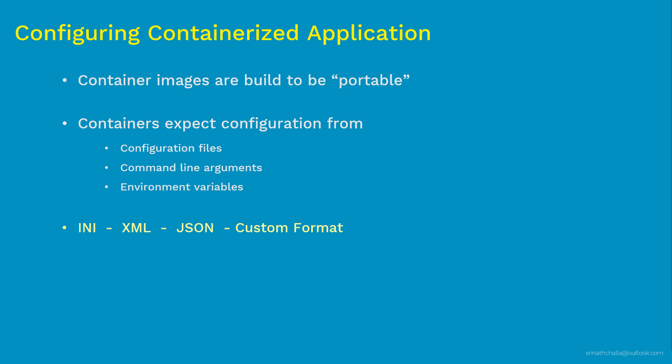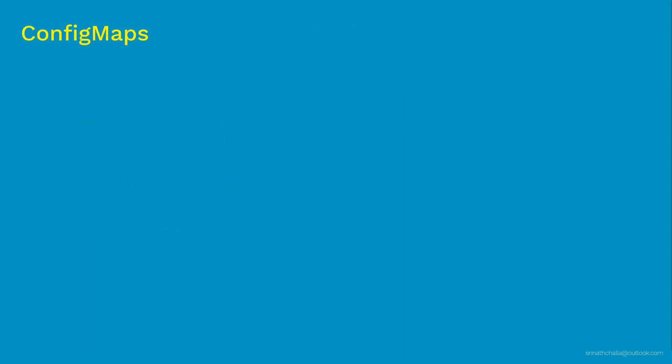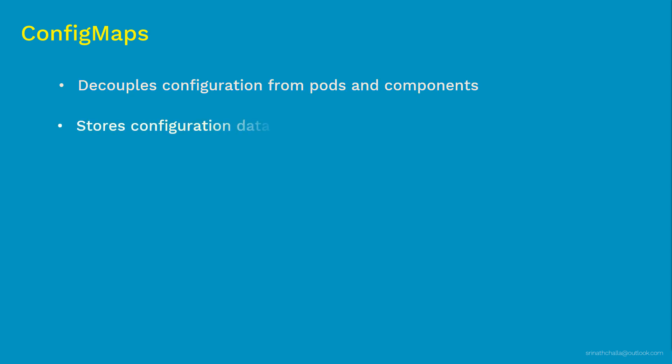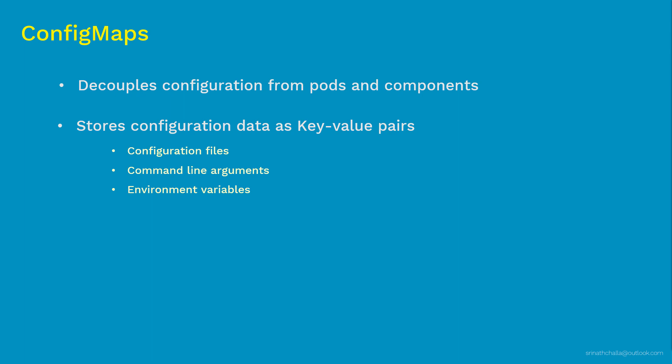Using ConfigMaps. A ConfigMap is a Kubernetes object which allows you to separate your configuration from your pods and components. As a result, it keeps your containers portable and makes configuration easier to change and manage, and prevents hard-coding configuration data into pod spec. ConfigMap stores the configuration data as a key-value pair. For example, if you are passing configuration in files, the name of the file is going to be the key and the content of that file is going to be the value.